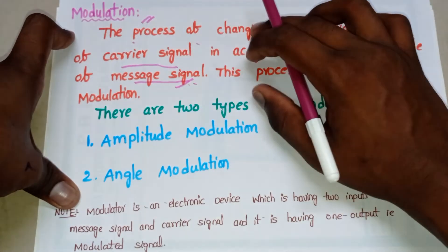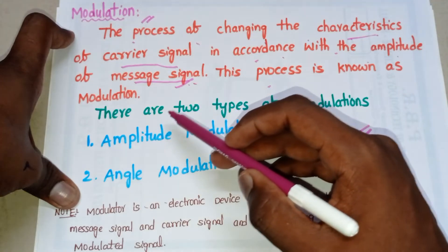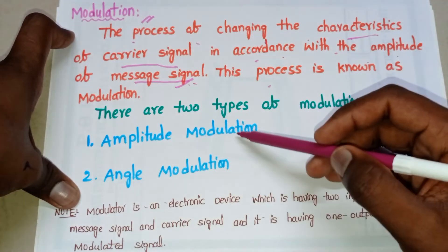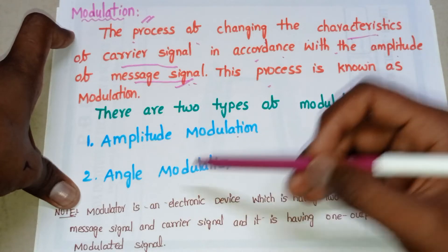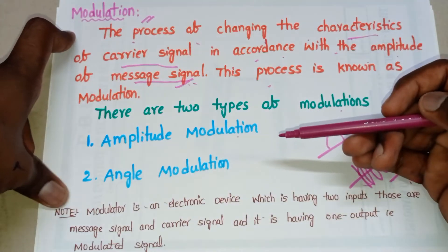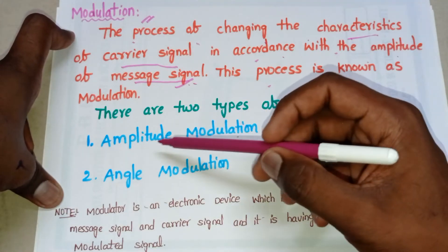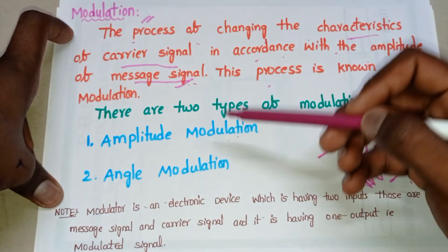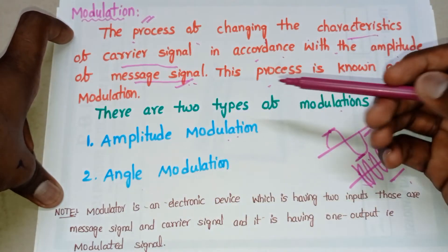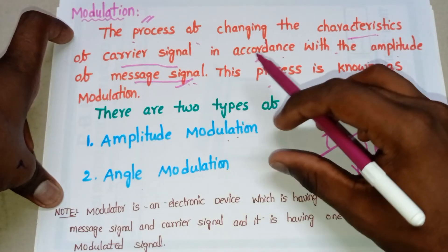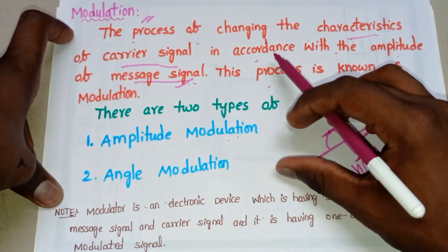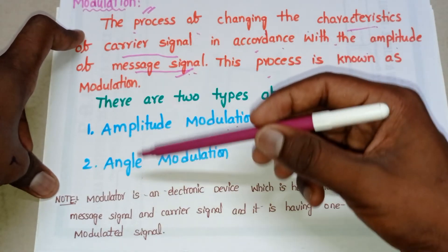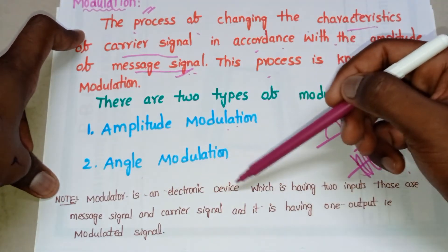That type of variation of the carrier signal according to the message signal is known as modulation. There are mainly two types of modulations: one is amplitude modulation and the other is angle modulation. These types of modulations will be discussed in our later videos.